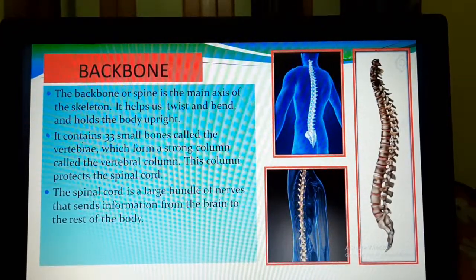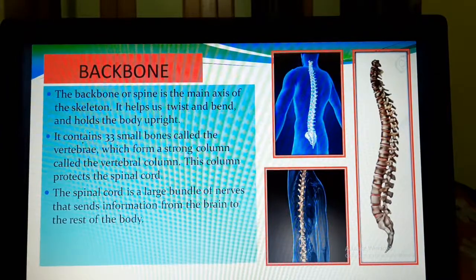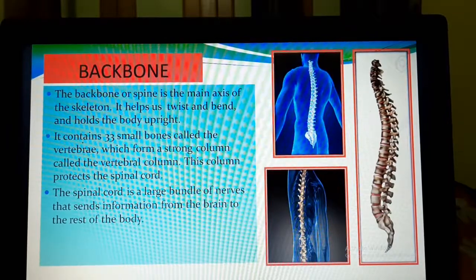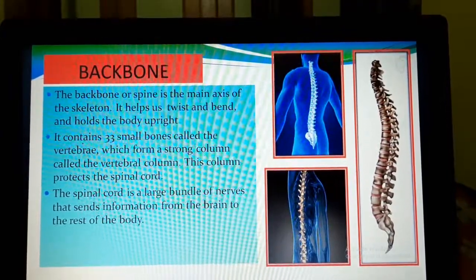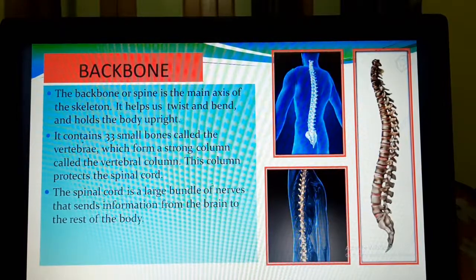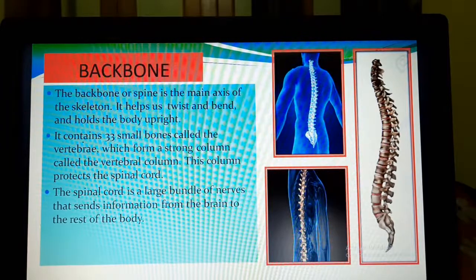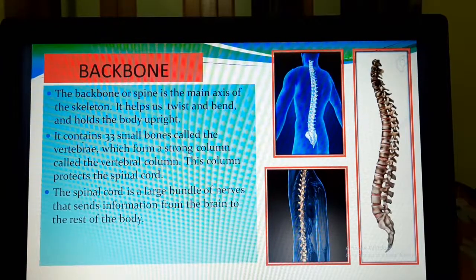Now let us discuss about the backbone. This is the picture of the backbone. The backbone is present at the back of our body. It supports our body, helps us to stand straight, sit straight, twist and bend our body — all types of movements are associated with the help of our backbone. The backbone is not made up of a single bone. If our backbone was a single bone like a pipe, we would be unable to bend because it is a straight, stiff bone. Our body needs movement, so our backbone is made up of 33 small bones called the vertebrae.